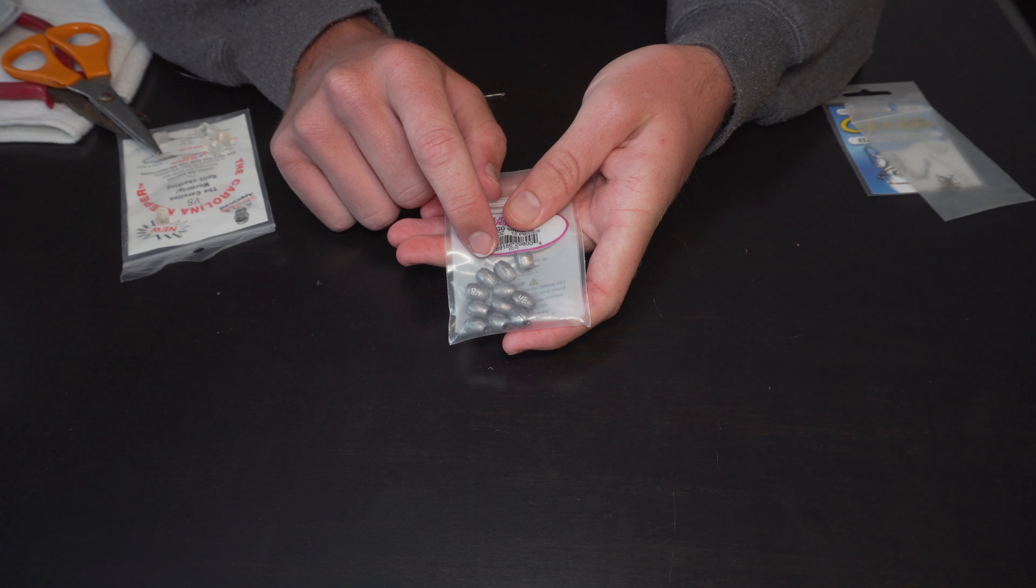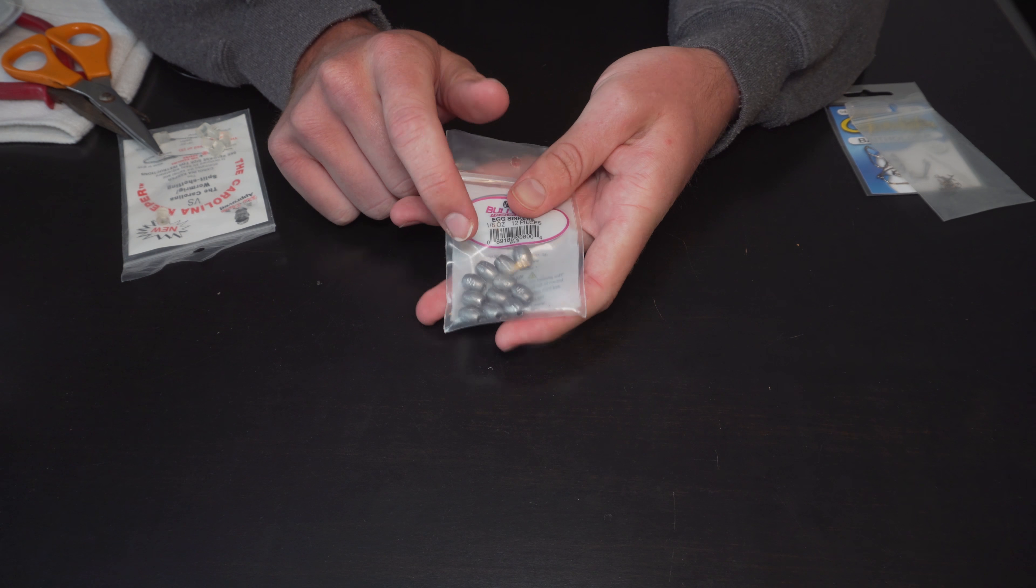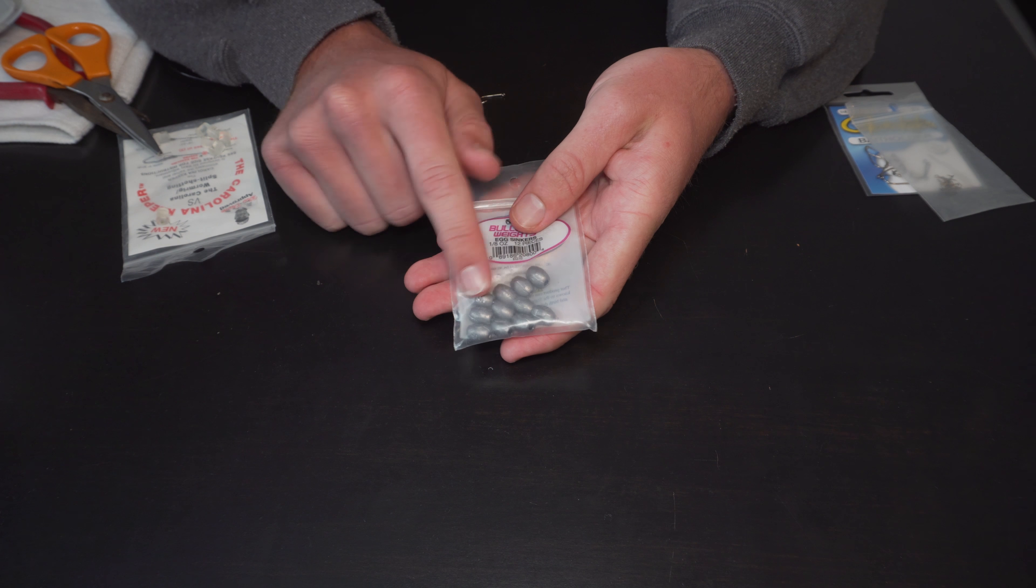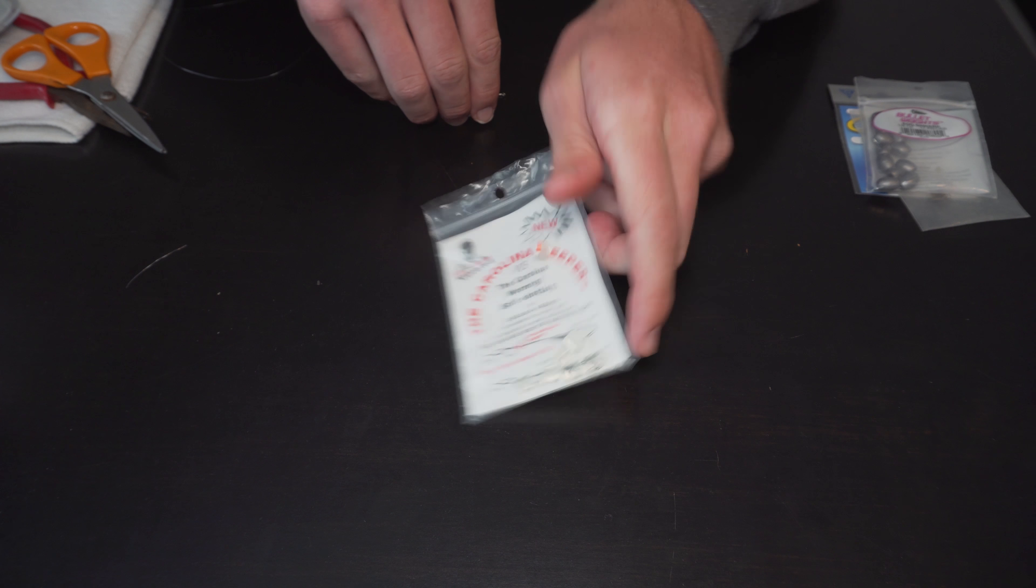So next up here, we've got our egg weights. Now I like a 1/8 ounce, especially in the winter and spring and fall months where the fish really aren't that deep. You don't need a lot of weight to get out there. And if you have an ultralight rod with thin line, this will be plenty enough to get you out far too.